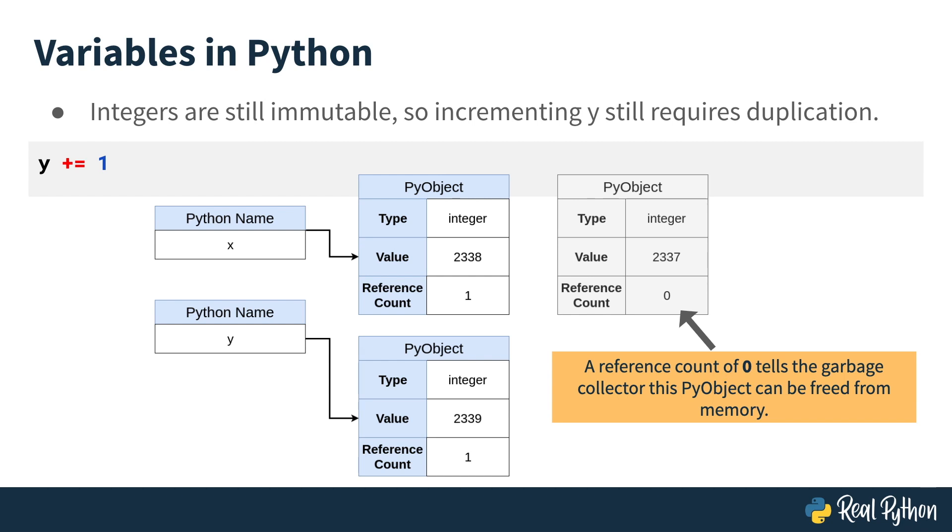The old PyObject, containing the value 2337, can be freed from memory because no names reference it anymore.